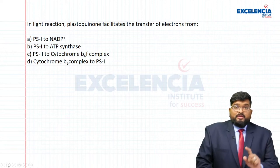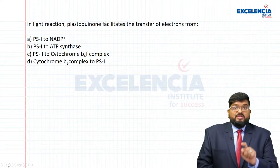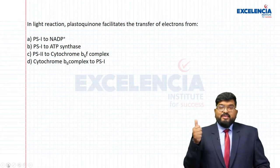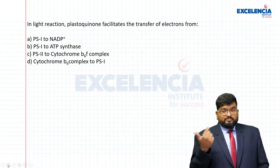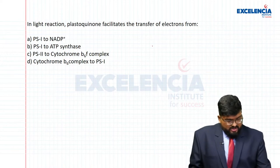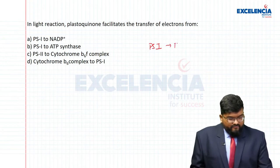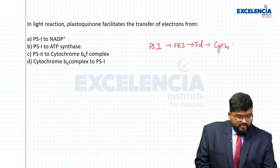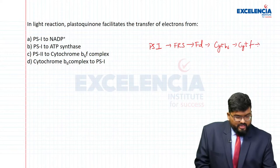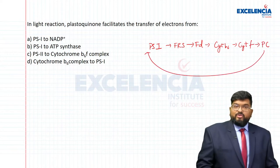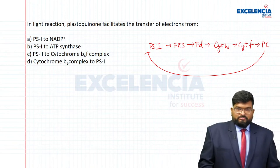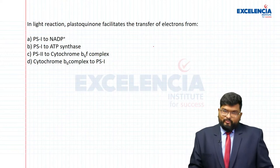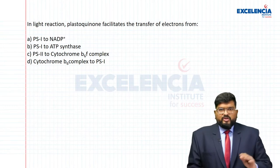Next question: in the light reaction, plastoquinone facilitates the transfer of electrons from — this is about photophosphorylation. There are two types: cyclic photophosphorylation and non-cyclic photophosphorylation. Components of cyclic photophosphorylation include PS1, ferredoxin-reducing substance, ferredoxin, cytochrome b6, cytochrome f, and plastocyanin, which returns electrons to PS1. Plastocyanin is not present in the options, so we are talking about non-cyclic photophosphorylation.